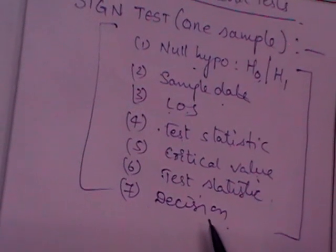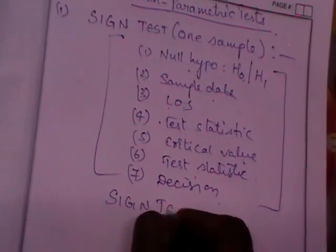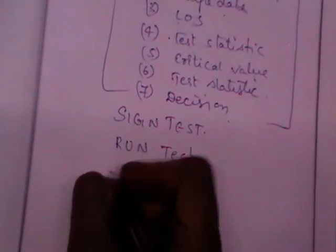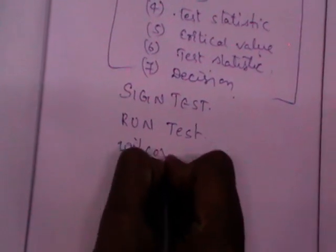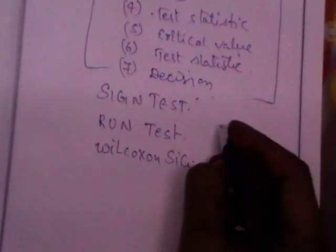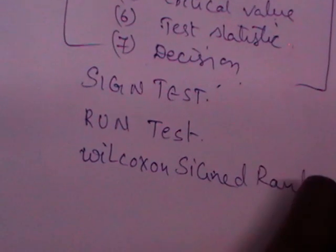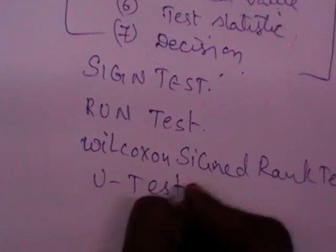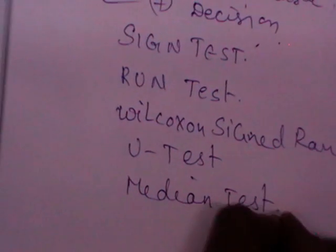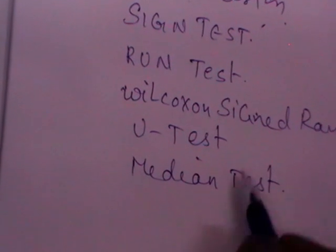Under non-parametric tests, you are going to read six tests in total: sign test, run test, Wilcoxon signed rank test, U test, and median test. Even though the terms are a little different, the tests are very easy.